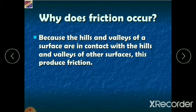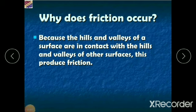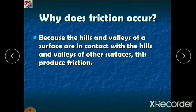Why does friction occur? Because the hills and valleys of a surface are in contact with the hills and valleys of another surface — this produces friction. No surface is perfectly smooth. When we see a surface in a microscopic scale, every surface has peaks and valleys. These peaks and valleys on one surface lock with those on another, creating forces that oppose the forward motion of an object.